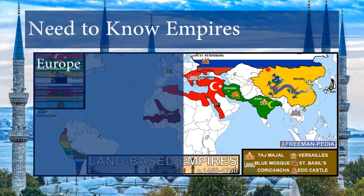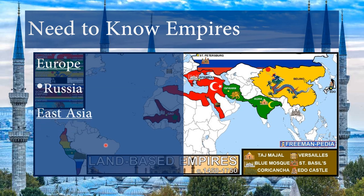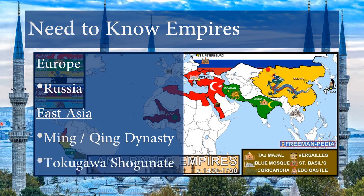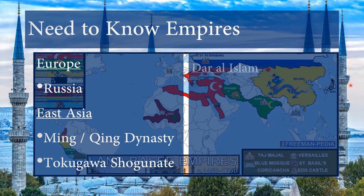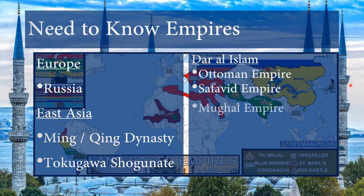In Europe, you have Russia — primarily in Asia geographically but ethnically a European empire. In East Asia, you have the Ming and Qing dynasty, focusing primarily on the Qing, and also the Tokugawa shogunate in Japan. In the Islamic world, you have the three gunpowder empires: the Ottoman, the Safavid, and the Mughal.